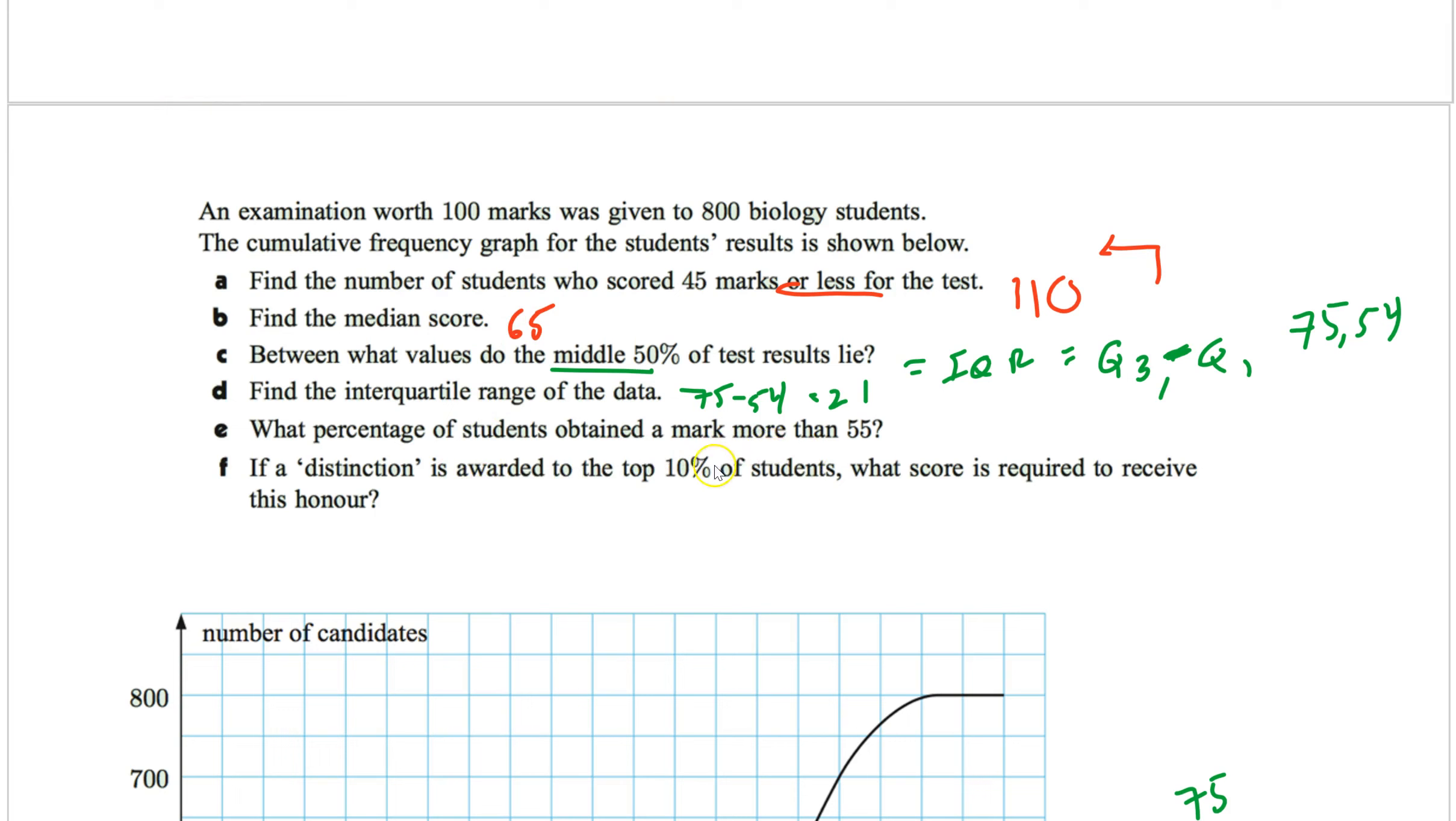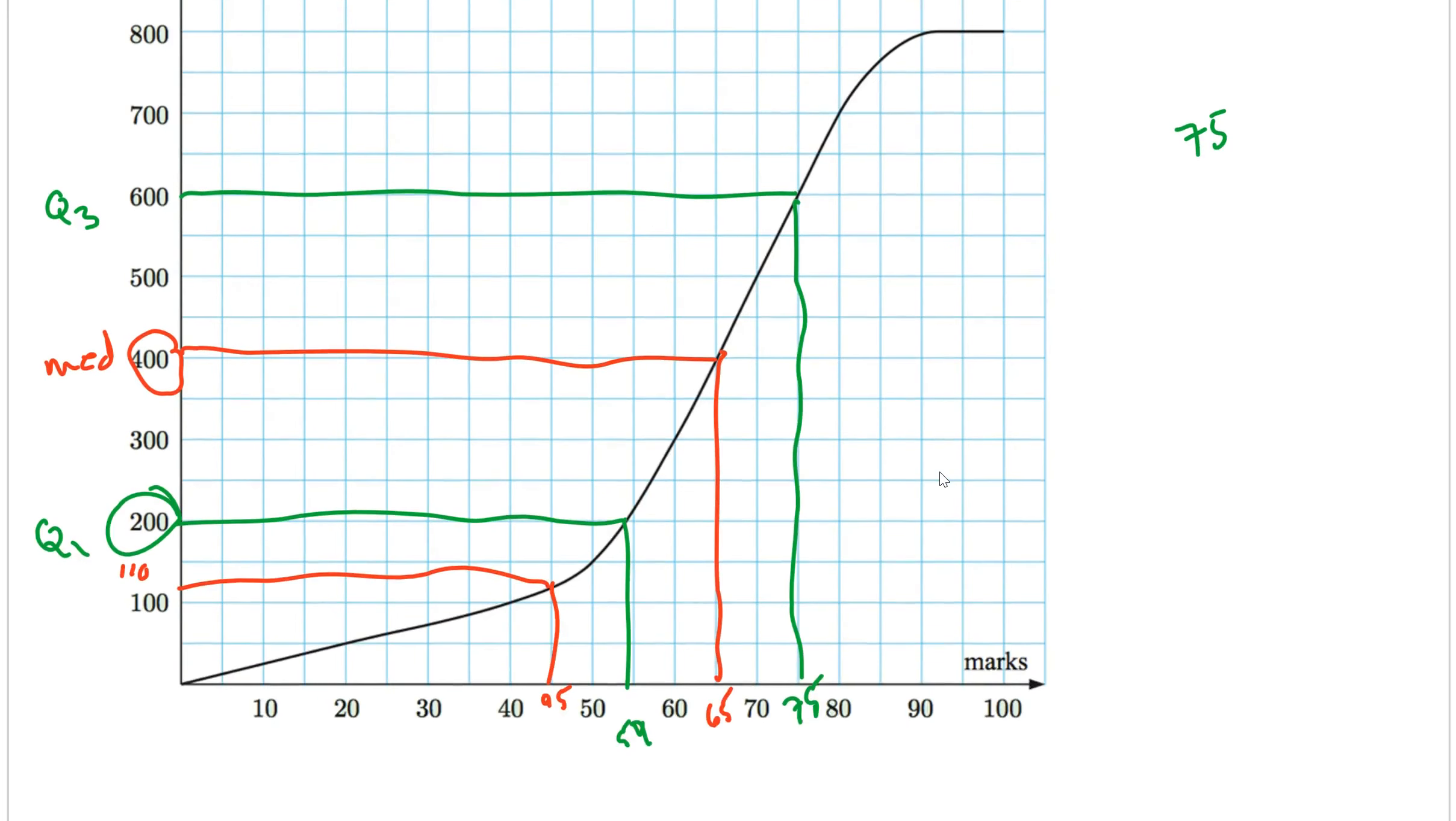Also, what percentage of students obtained a mark more than 55. Again, a couple of things you want to know. They give you the marks. We're looking at marks first. We're going to go mark up and across. They want more than 55. And again, also notice it says percentage. So once I get my number, it's not the answer. I can divide by the whole thing. So more than. Again, from the top, more than. So I go down here. Look at my marks. So here is 55. So again, these are my marks. I go up and across. You always use the graph on this problem. And then go across. And it's another estimate. So about, let's say 220.